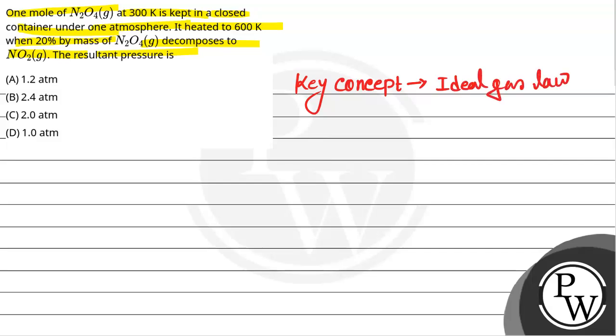The ideal gas law is PV equals nRT, where P is the pressure, V is the volume, n is the number of moles, R is the universal gas constant, T is the temperature. And for two gases...